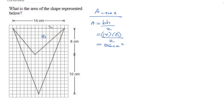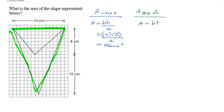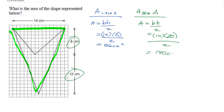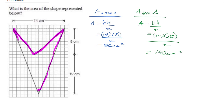Now find the area of the big triangle — the entire one from edge to edge. Same formula: base times height divided by two. The base is still 14, but the height is 8 plus 12 equals 20. So 14 times 20 divided by 2 equals 140 centimeters squared.